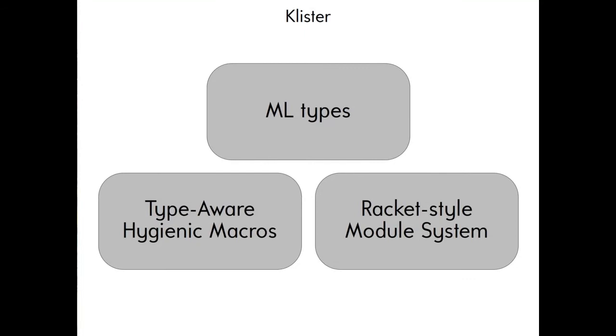How does it work? Well, the language we've been making is called Clista. It features an ML style type system, which is to say it's got parametric polymorphism in a prenex position, it's got data types, definitions by pattern matching, principal types, all the usual things you expect from ML.